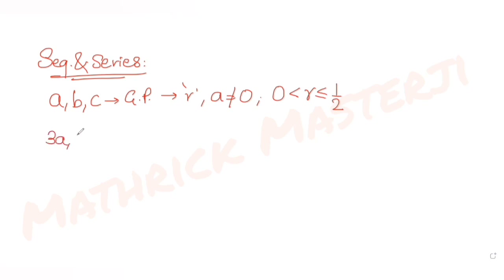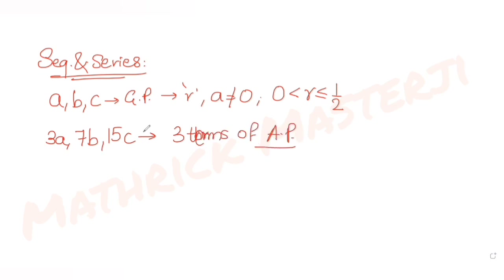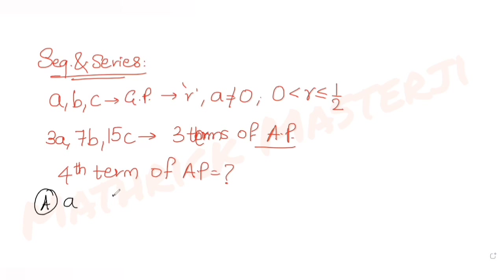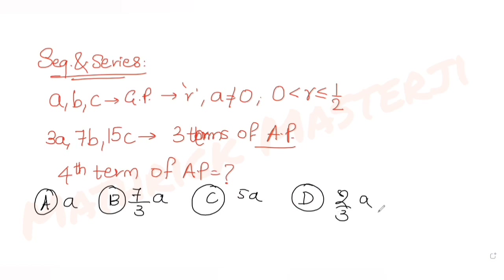Further, the question says that 3a, 7b, and 15c are the first three terms of an arithmetic progression. We need to figure out what the fourth term of this arithmetic progression is. The answer choices are given in terms of a, with the last option being 2/3 a.